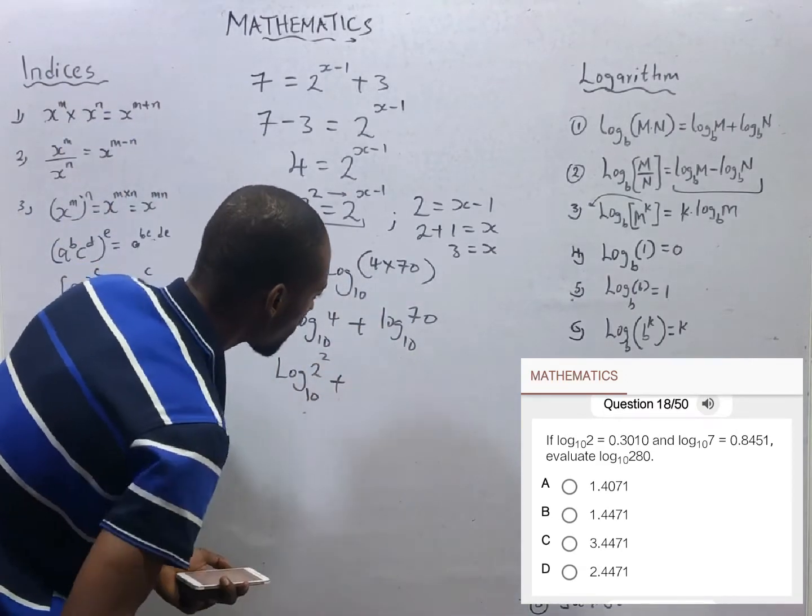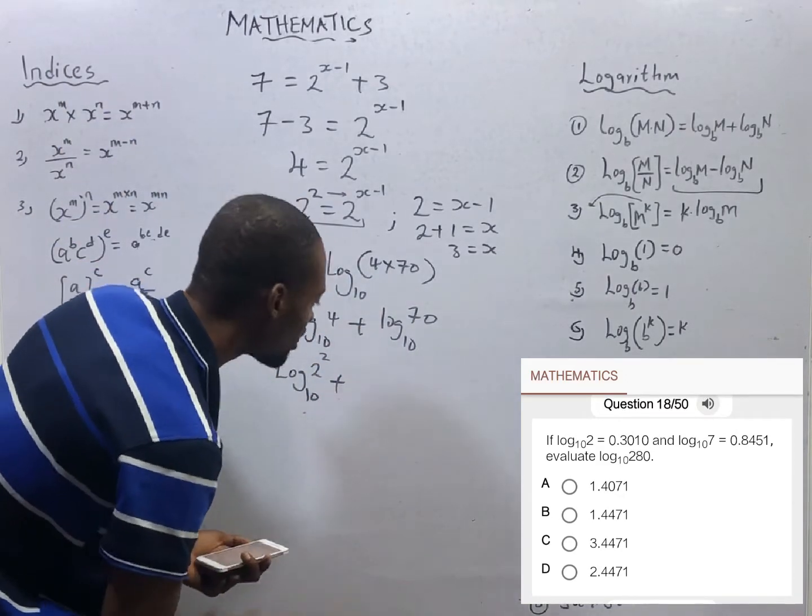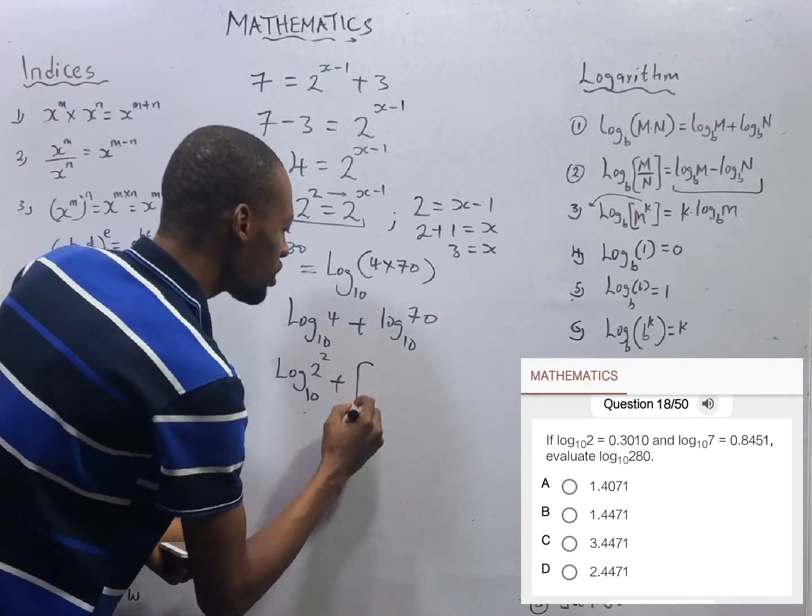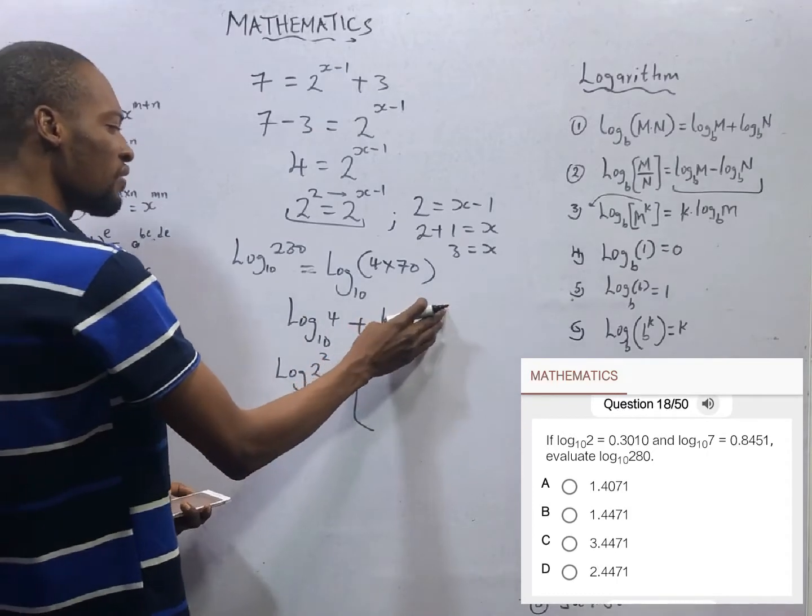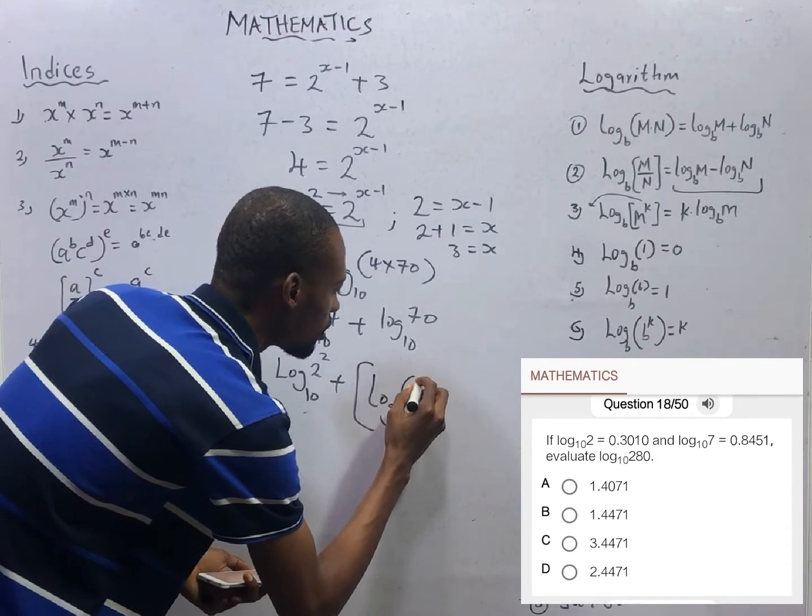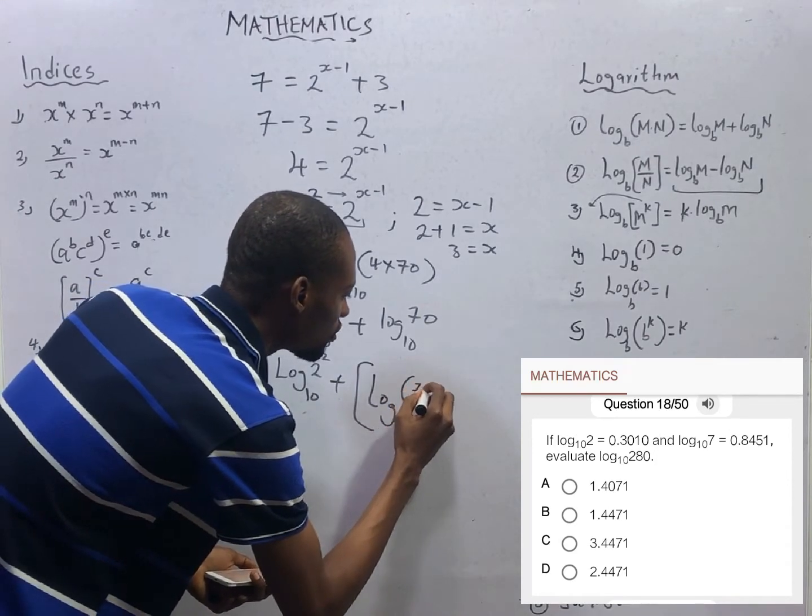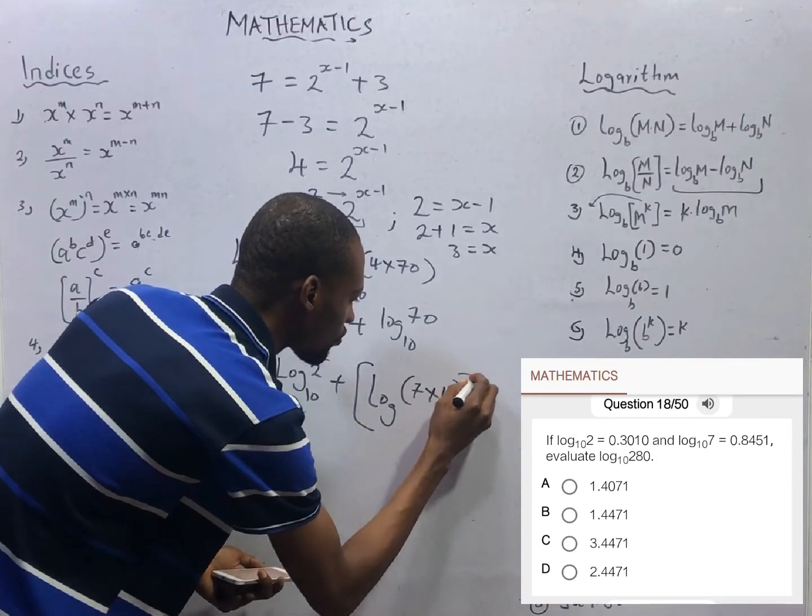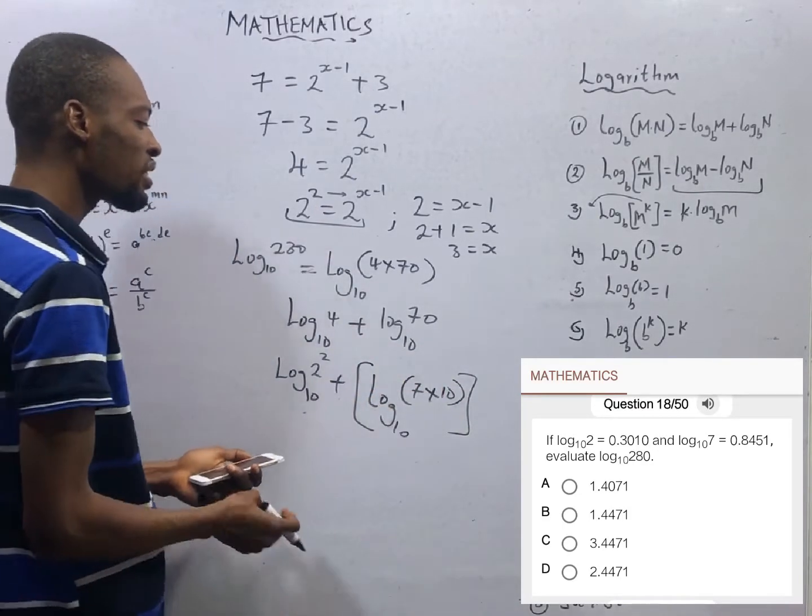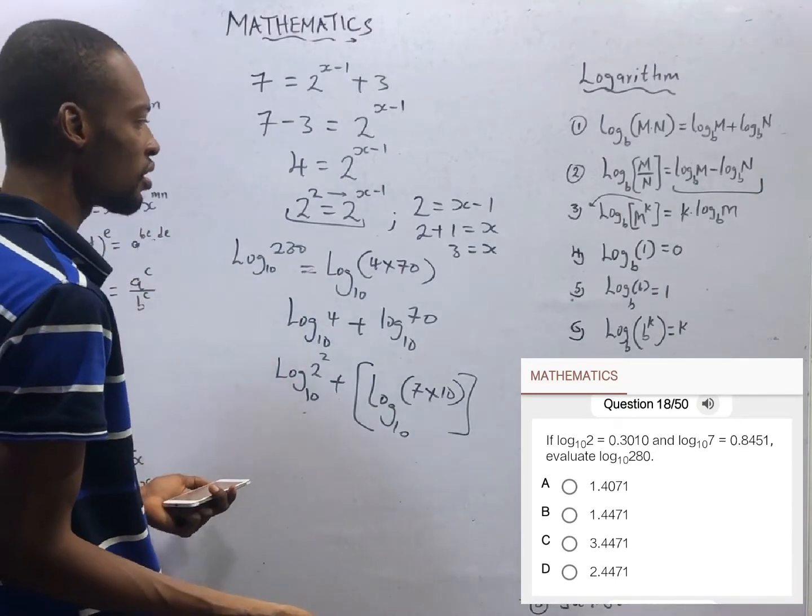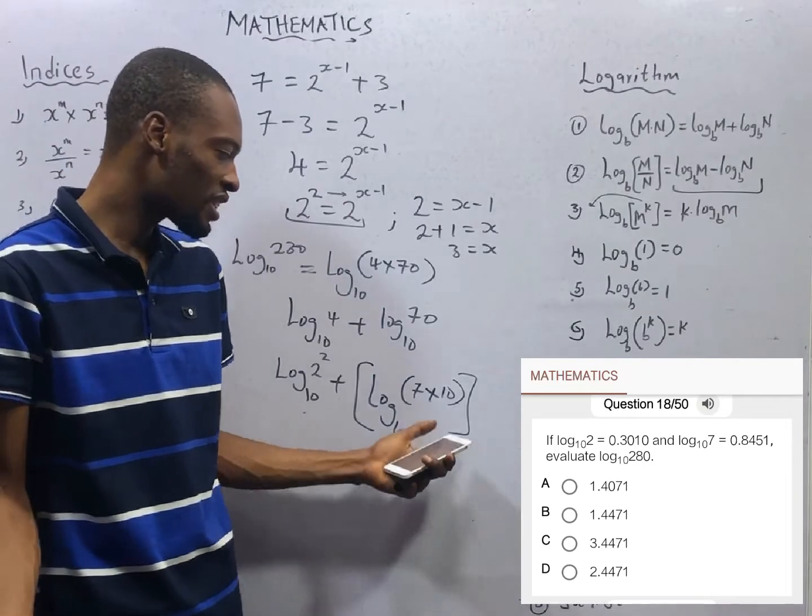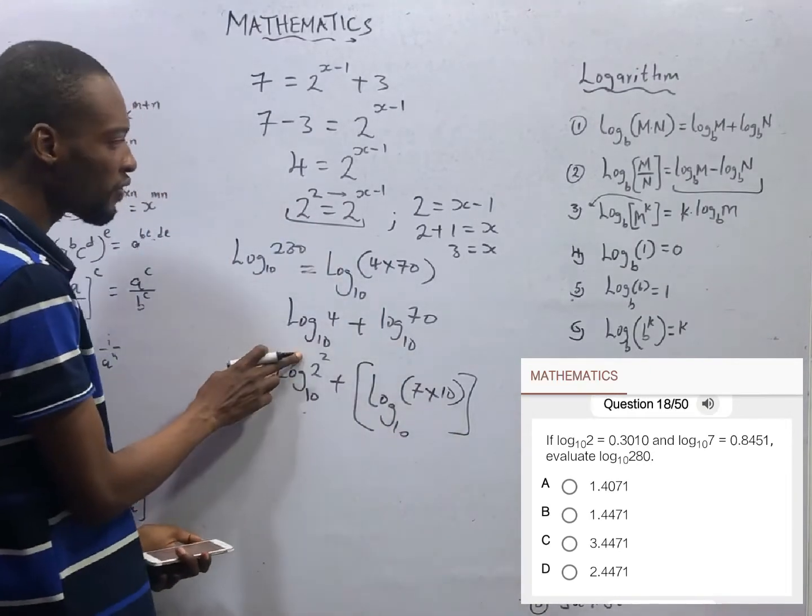Plus, here, we cannot bring out 7 directly. We cannot say 7 to the power of something to give us 70. However, we know that log 70 to base 10 is the same thing as log of 7 times 10 to base 10. So log 70, 7 times 10 is the same thing as log 7 to base 10. So this is this, multiplication log. If this is this, and from the law of logarithm, if you have log base m to the power of k, you bring down the power.